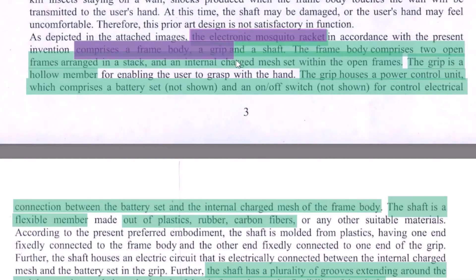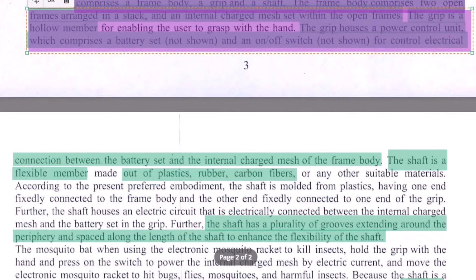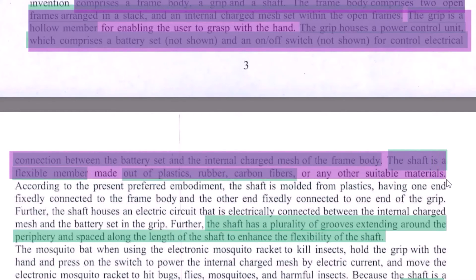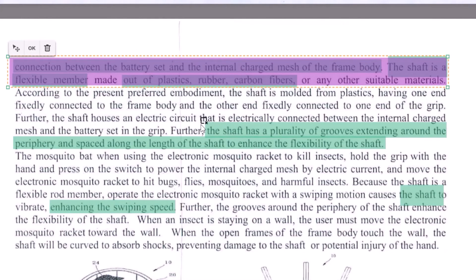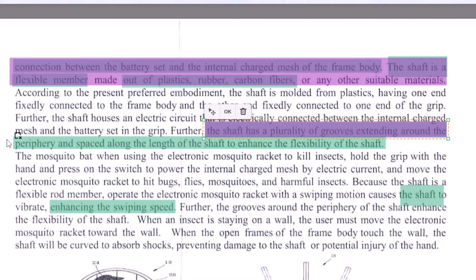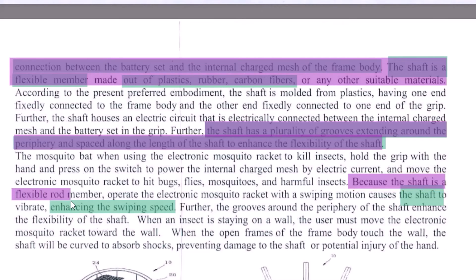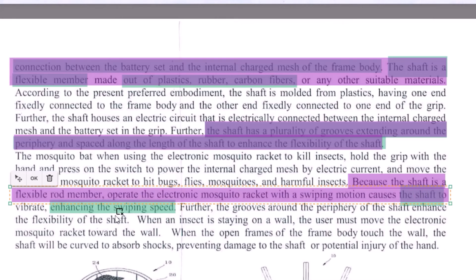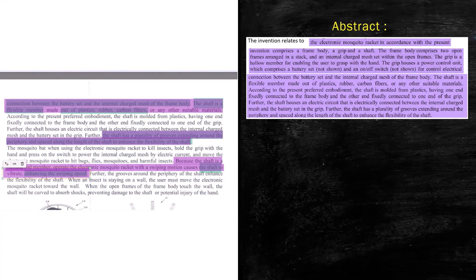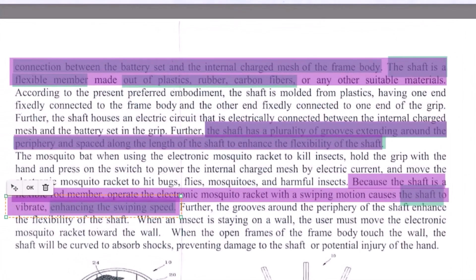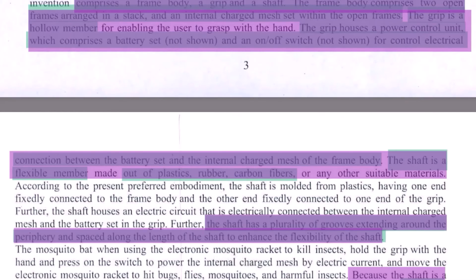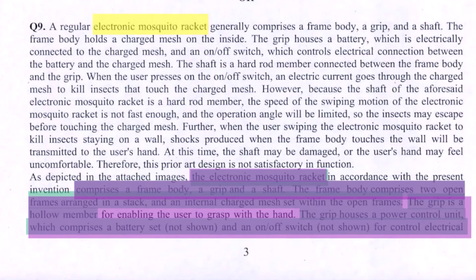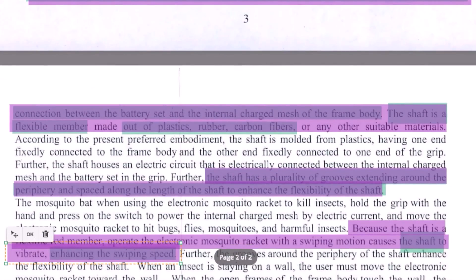The abstract continues: '...which comprises a frame body, a grip, and a shaft.' You can include all these details, provided that we are left with enough words. You should use the part where the shaft properties are defined, and if words remain, you can also include information about how the shaft being a flexible rod member provides advantages in using the invention. A sample abstract has been provided for reference. As promised, using only the copy-paste method, the language has been restricted to words and sentences provided in the disclosure.